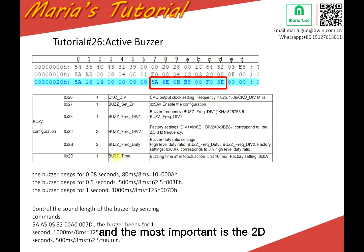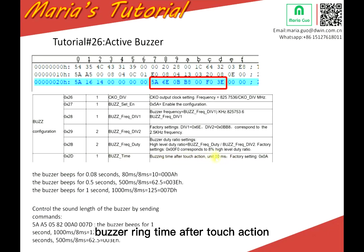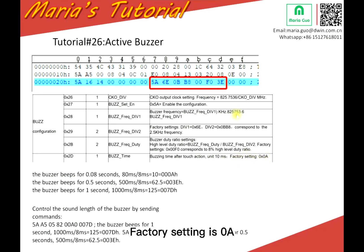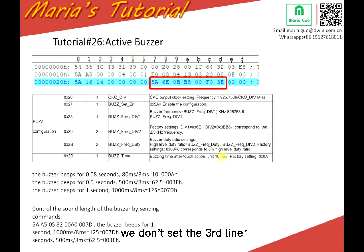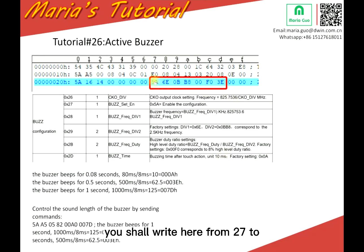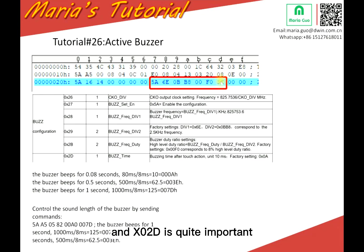The most important is 2D. 2D is the builder time — the buzzing time after touch action. Unit: 10ms. Factory setting is 0A. Normally for the CFG we don't set the third line, but if you want to activate the builder, you should set from 27 to 2D. And 2D is quite important because it's the buzzing time.